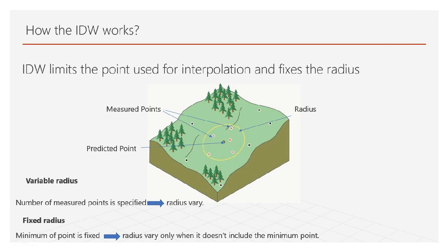So how does IDW work? IDW limits the points used for interpolation and fixes the radius. As we see here in this figure, we have the measured points in red color and the predicted point in yellow color. In the IDW method we have two options. The first is variable radius, where the number of measured points is specified — for example, if we specify five points, the radius has to contain only five points.